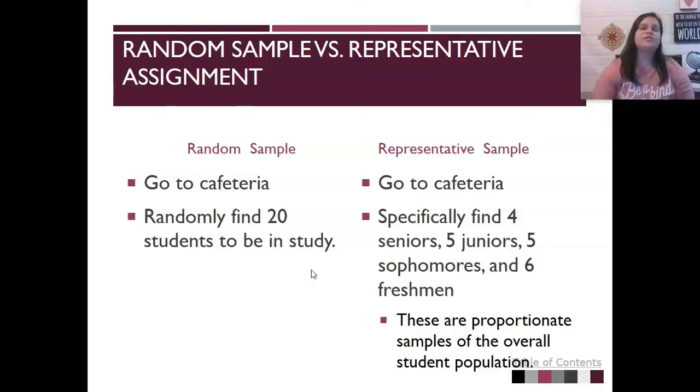A random sample versus representative sample, if we were actually trying to do this. Let's say we're going to do the Axe body spray study, but instead of having one person, like Johnny, we're going to find actual guys, like groups of guys. With a random sample, I would go to the cafeteria, and I would randomly find 20 students to be in the study. Another way I could do it is I could go down to the counselor's office and say, generate me a list with 20 random students. That would get me a random sample, and that would be considered an unbiased way to find participants in a study.